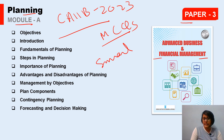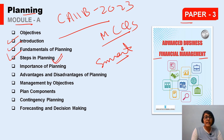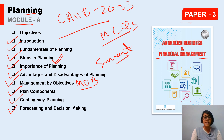Smart Planning — a plan which will help you complete your revision in the most efficient manner. In this Planning chapter, the topics covered are: Introduction, Fundamentals of Planning, Steps in Planning, Importance of Planning, Advantages and Disadvantages, Management by Objectives (MBO), Plan Components, Contingency Planning, and Forecasting and Decisions. These are all important topics with the most chances of MCQs.